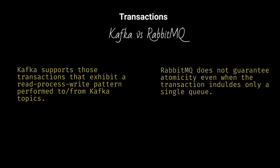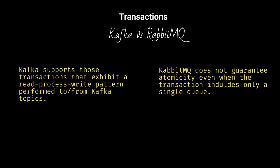Kafka supports those transactions that exhibit a read-process-write pattern performed to and from Kafka topics. RabbitMQ does not guarantee atomicity even when the transaction involves only a single queue.